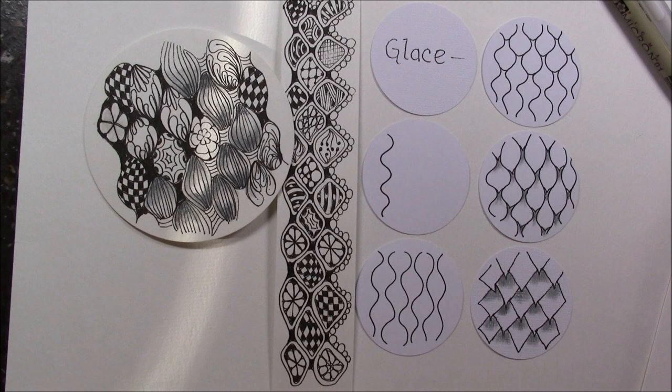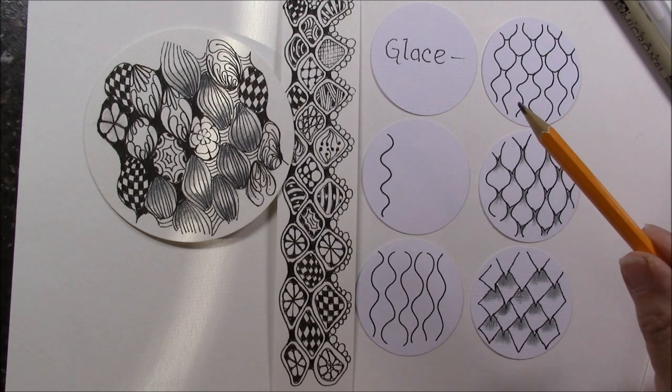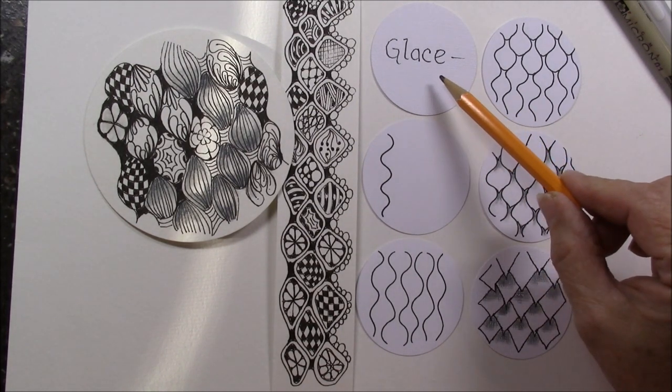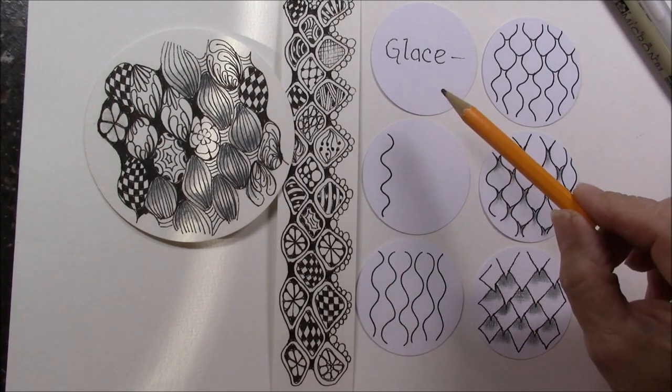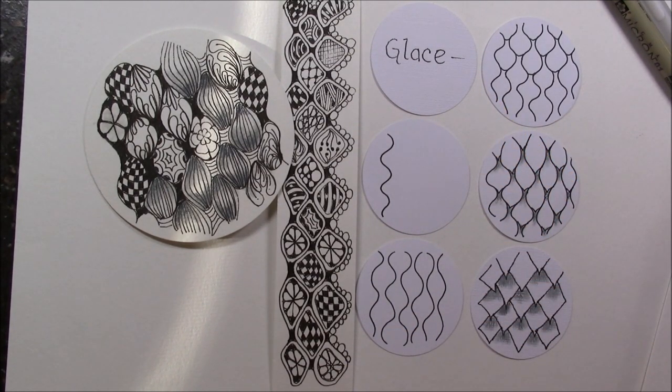Welcome, this is Melinda Barlow, CZT certified Zentangle teacher. Today's lesson is Glace, a Canadian word mainly used in Montreal. It's like glass - smooth with a clear finish. I did read somewhere where it had wavy lines, but I'm not sure about that.